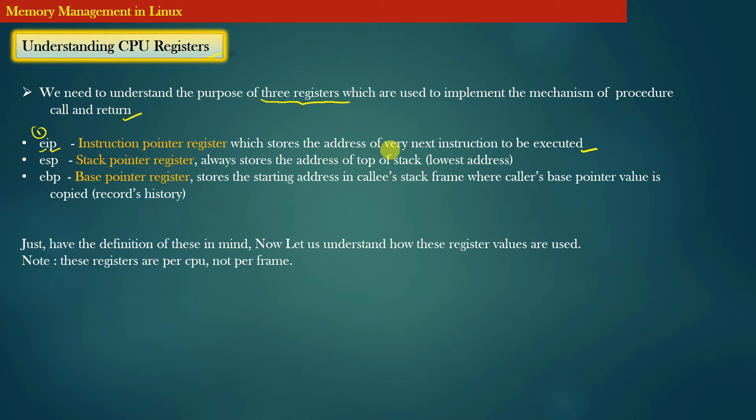The second register is a stack pointer register. Stack pointer register always stores the address of top of the stack, that is the lowest address of the stack memory. And the third register is a base pointer register.